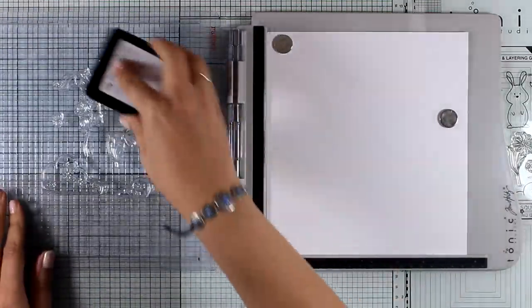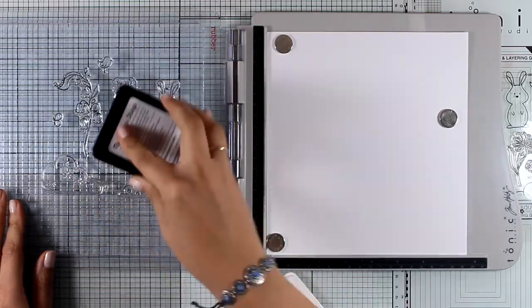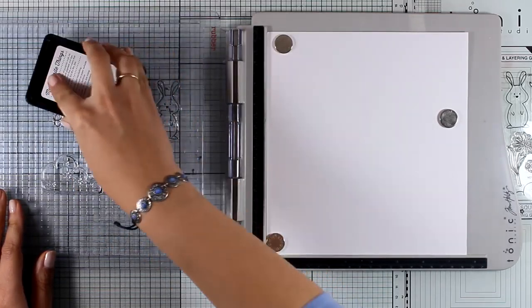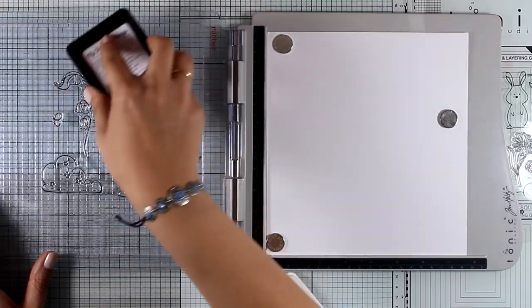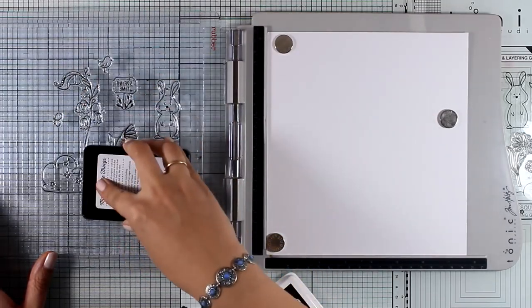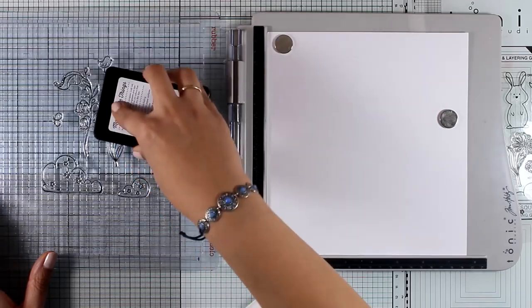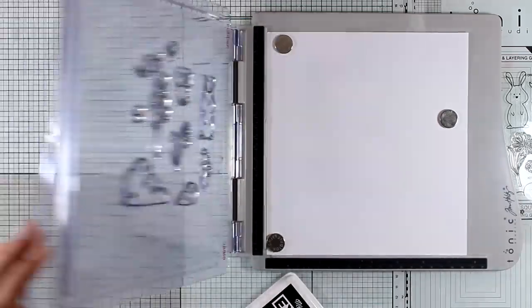Now it's time to do some stamping. I picked a lot of images from the stamp set and I'm going to stamp everything with black ink. This is Extreme Black ink by My Favorite Things, which is perfect if you want to work with alcohol markers. Since I wanted to stamp a bunch of images at one time, I went with my stamping platform. This is by Tim Holtz.